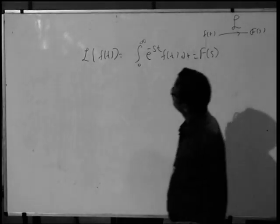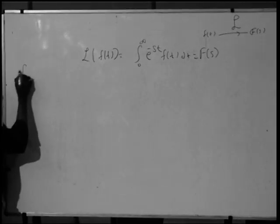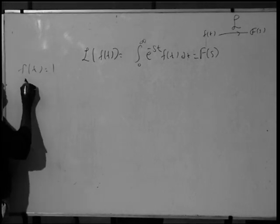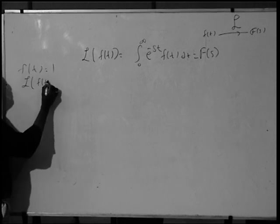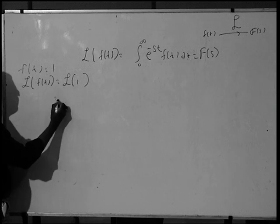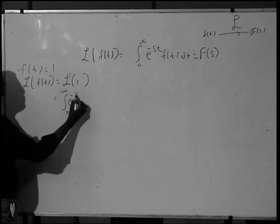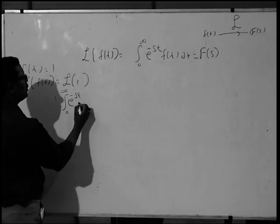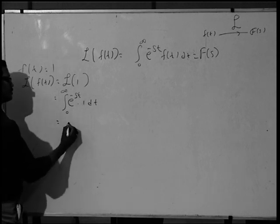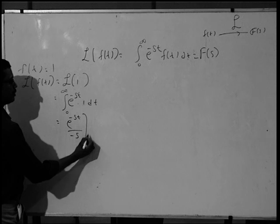To find the Laplace transform, consider f(t) equal to 1. For f(t) equal to 1, L of f(t) is equal to L of 1. By definition, L of 1 equals the integral from 0 to infinity of e raised to minus st into 1 dt. If you integrate with respect to t, this is e raised to minus st divided by minus s.